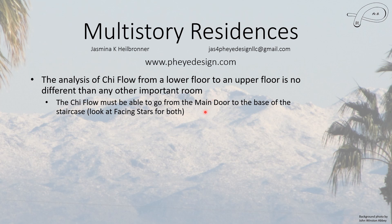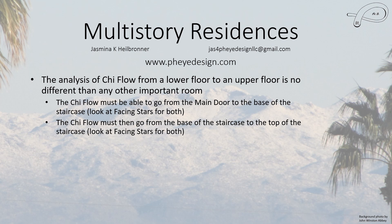Basically it's done in three steps. You look at the chi flow from the main door to the base of the stairs, and you're looking at the facing star of the sector where those two things are located. Then you look at the flow from the base of the stairs to the top of the stairs, again looking at the facing star in both of those locations.